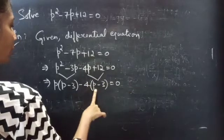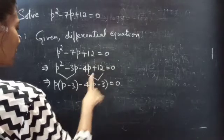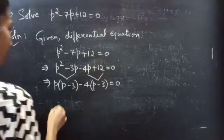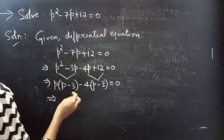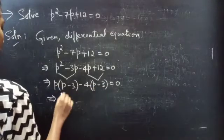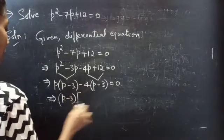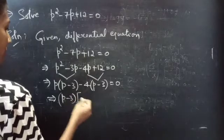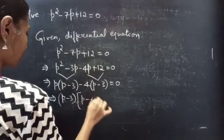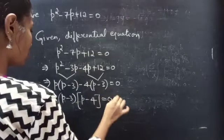Minus 4 into P is minus 4P. Minus into minus is plus, 4 times 3 is 12. Since we are having (P minus 3) in both the terms, take (P minus 3) common from these terms. Then we will get (P minus 3) times (P minus 4) equals to 0.